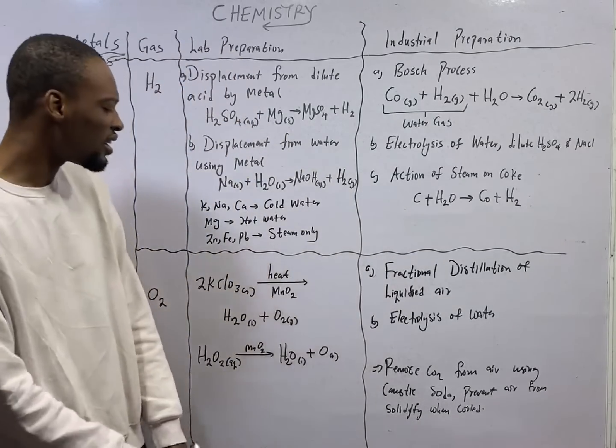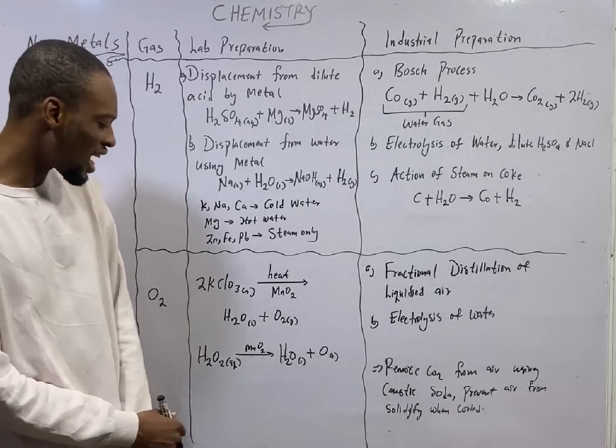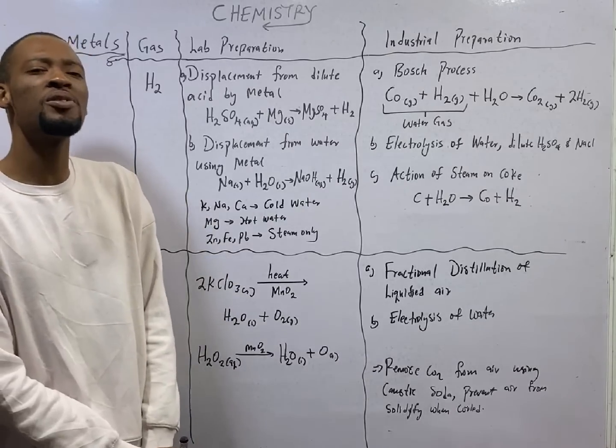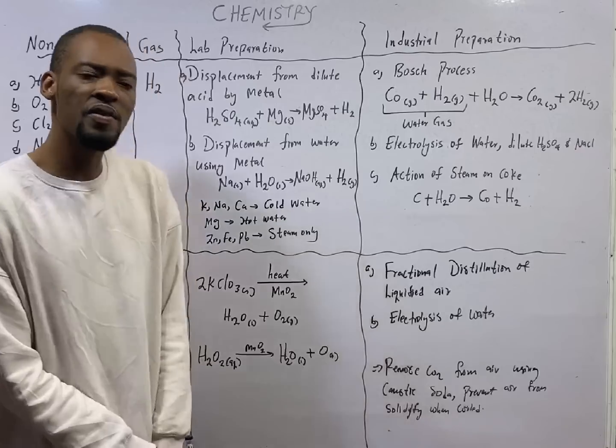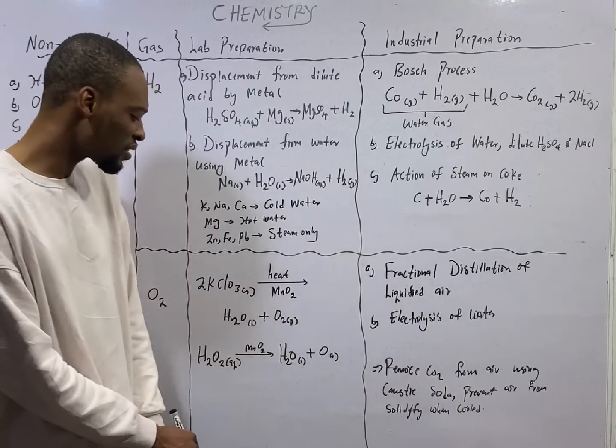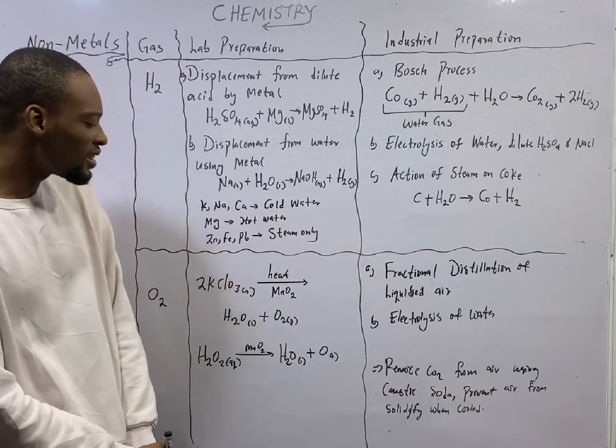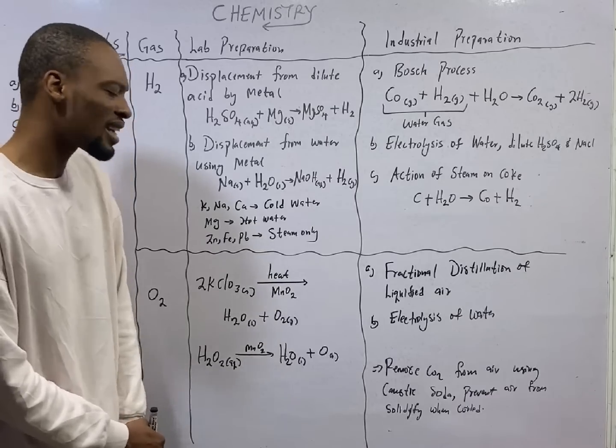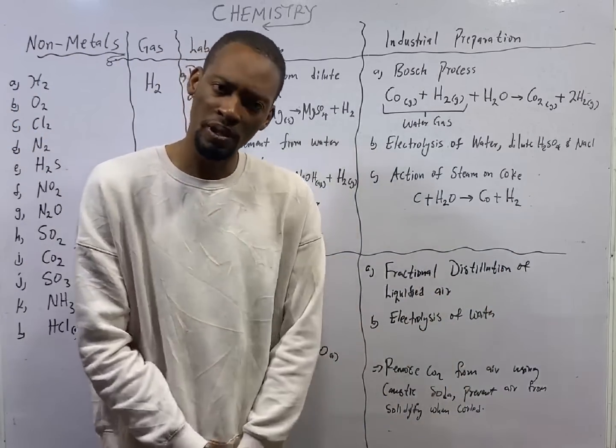The second way to prepare oxygen in the lab is decomposition of hydrogen peroxide. In the presence of catalyst manganese 4 oxide, when hydrogen peroxide decomposes, you will get water and oxygen gas will be liberated.